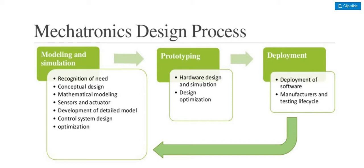In modeling and simulation, the steps include: recognition of the need, concept design, mathematical modeling, sensors and actuators — that means hardware required for sensing different physical signals from the environment — and actuators which convert software signals into hardware. Then development of detailed models, control system design, and optimization. These are the various steps required for modeling and simulation in the mechatronics design process.